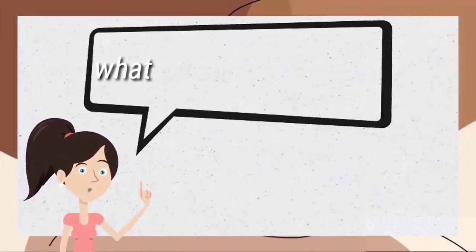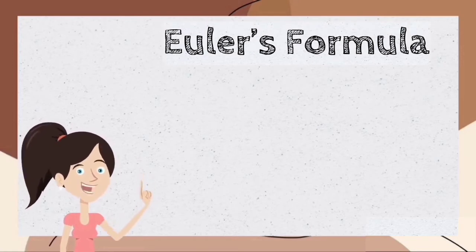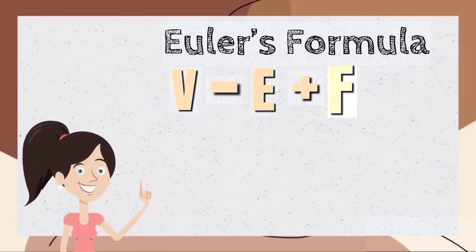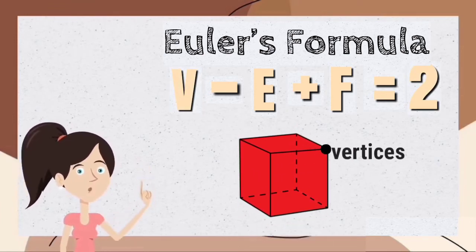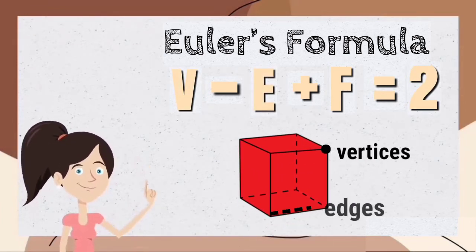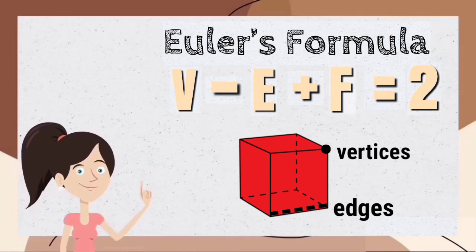Do you still remember what Euler's formula is? Euler's formula is V - E + F = 2, where V stands for vertices, E stands for edges, and F stands for faces.